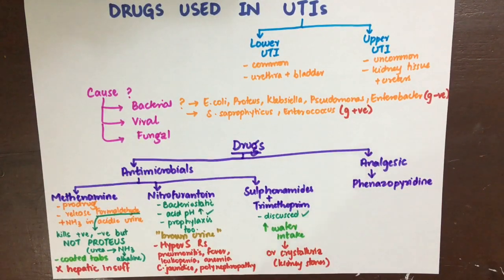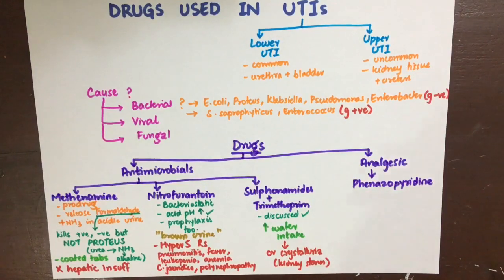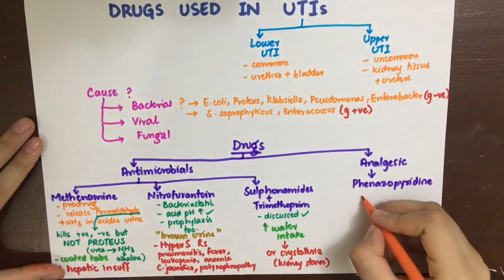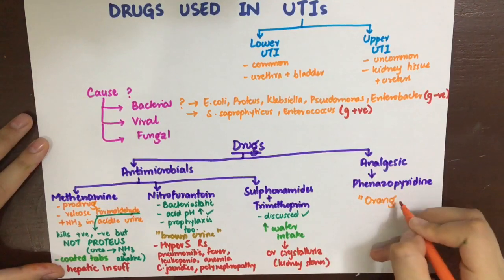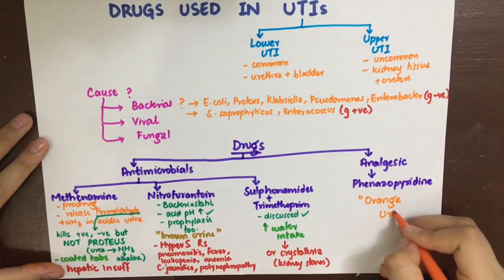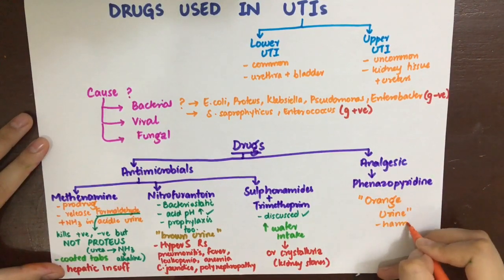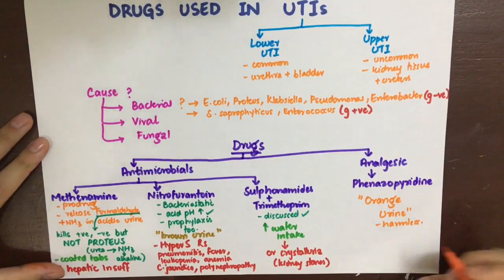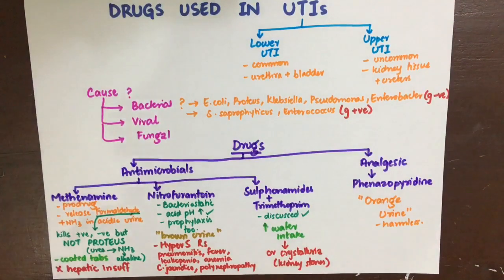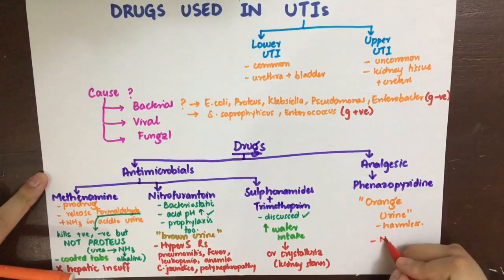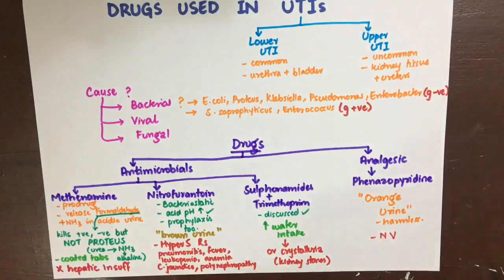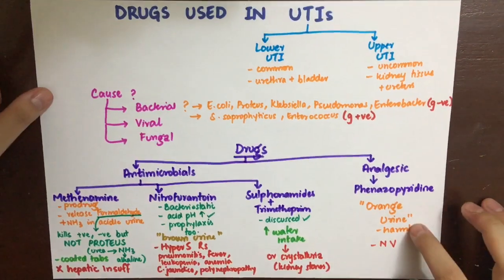The analgesic that can be used is phenazopyridine. It is not antimicrobial — it is an analgesic that relieves suprapubic pain, burning sensation, and frequency of urination associated with UTIs. It will make the urine orange-red, which is harmless but the patient needs to be counseled. It can also cause nausea and vomiting.